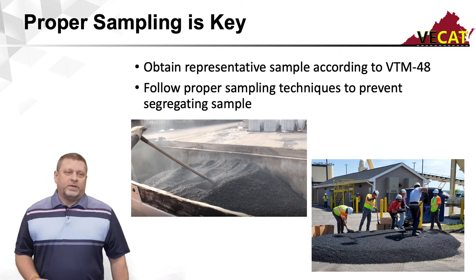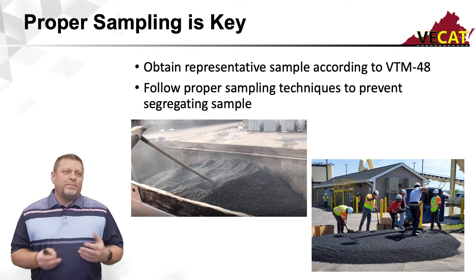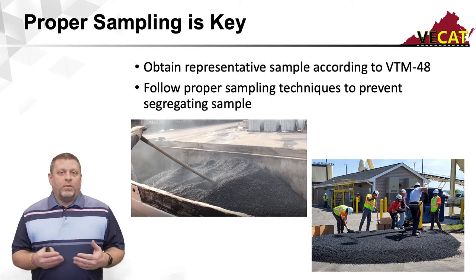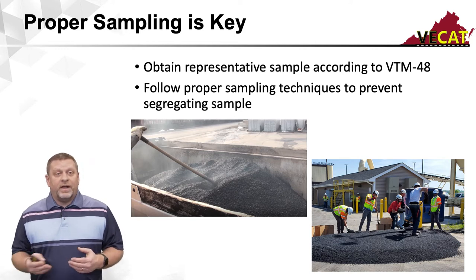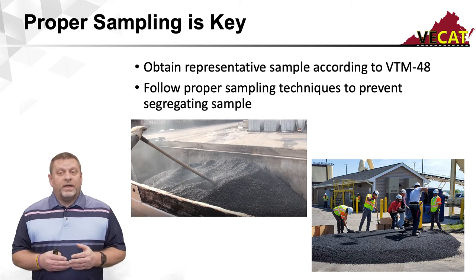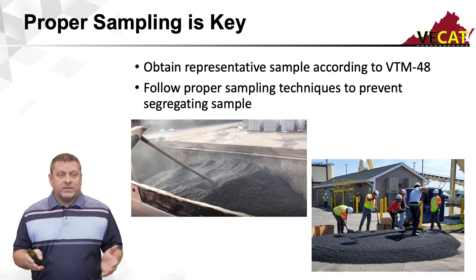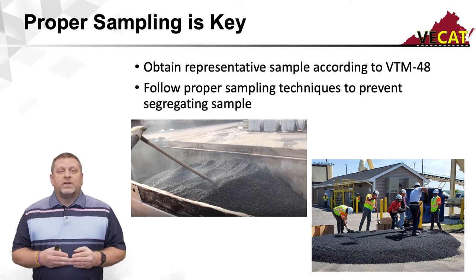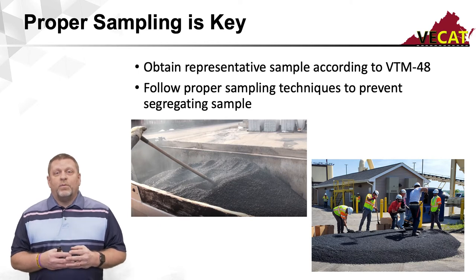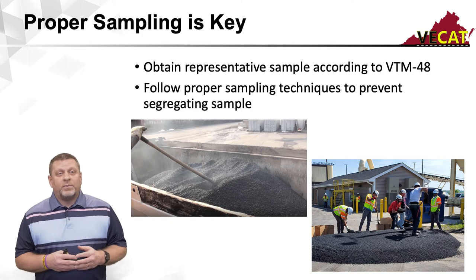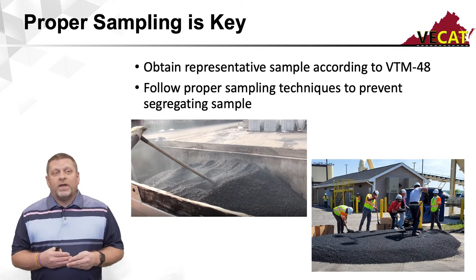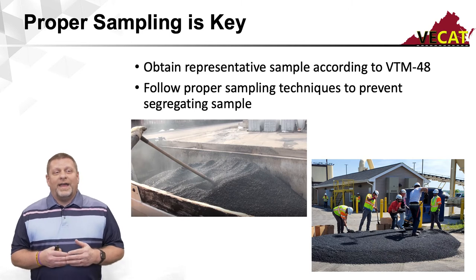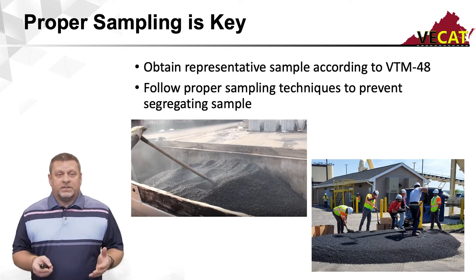Proper sampling is key to your field production testing. Prior to BMD, we would take a volumetric sample or furnace burn sample — and a volumetric sample is only three pills per test. When it comes time to obtain a sample, whether volumetric or volumetric and BMD, you've got to obtain a representative sample according to VTM 48. VTM 48 requires that you level off the top of your load of asphalt — as seen here in the first picture. Once I start taking a couple scoops for my volumetric sample, I'll very quickly have covered the entire surface without even beginning to sample my BMD specimens yet.